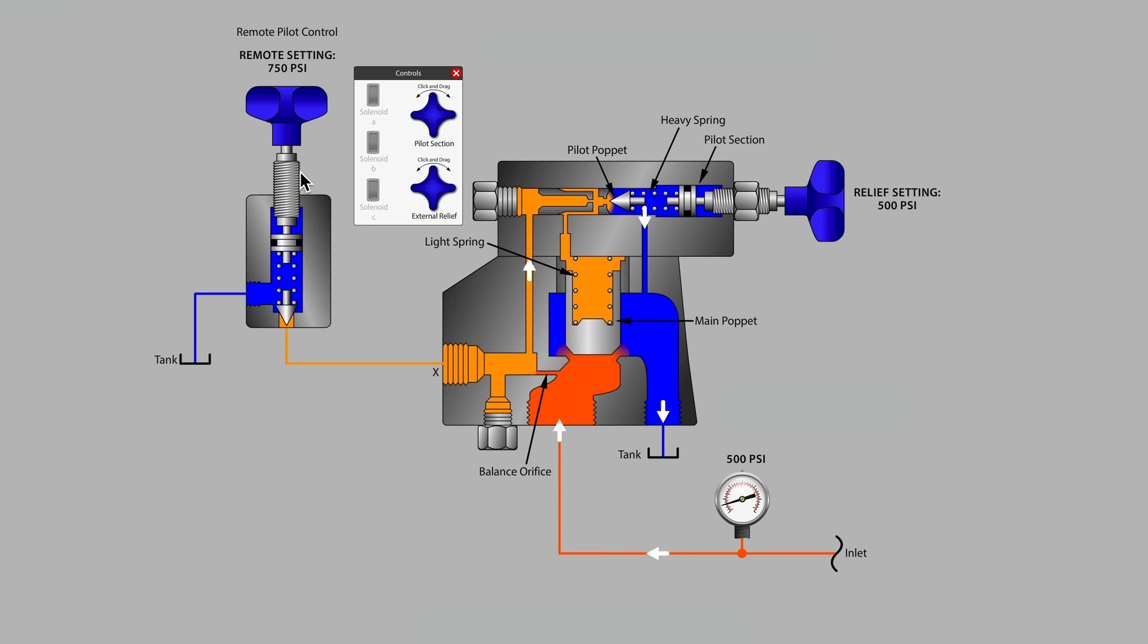Right now our system pressure gauge shows 500 psi, and that is the setting of the pilot section on the main relief valve. So clearly the pilot section on top of the relief valve is controlling system pressure at the moment.